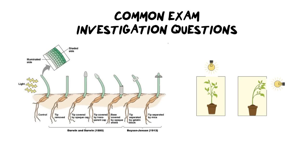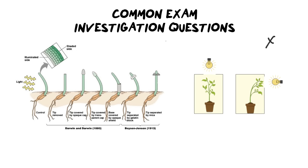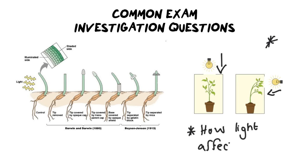Now I'm going to show you a common exam investigation question. There are really only two ways they can ask phototropism, so you can expect one of these two experiments in some format. The easier one on the right-hand side is very straightforward: you've got a plant in a box receiving light directly from the top unilaterally, and then a plant where the light source comes from another direction causing it to bend towards that light. This is the most common way they ask it, and generally the aim of that experiment is to see how light affects growth.